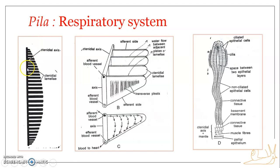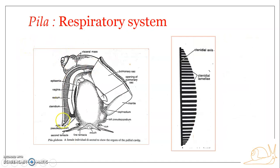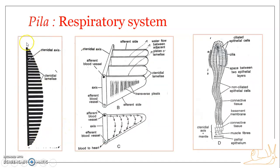The ctenidial axis bears a long series of flat triangular leaflets. These leaflets are the ctenidial lamellae. Each lamella is attached by a broad base to the ctenidial axis. The three edges of each ctenidial lamella are unequal — there is a shorter side and a longer side.